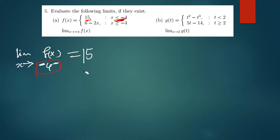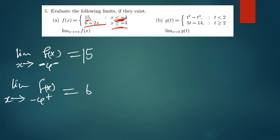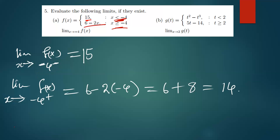Now let's look at the right side of this limit — the limit of f(x) as x approaches negative 4 from the positive side. From the right, we use the function 6 minus 2x, since that applies when x is greater than or equal to negative 4. We replace x with negative 4: 6 minus 2 times negative 4 gives us 6 plus 8.